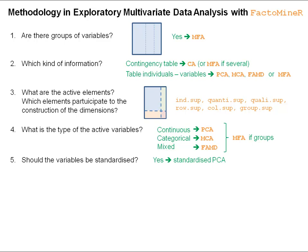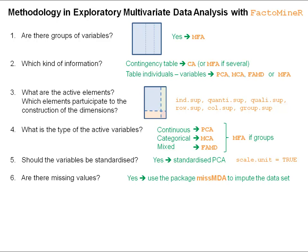If you want to standardize the variables, you will perform a standardized PCA and use the argument scale.unit equal to TRUE. Another question is: are there missing values? If there are missing values, you can use the package missMDA to first impute the dataset. The functions in this package will impute the dataset so you can perform a principal component method on a completed dataset, and then perform PCA, MCA, or MFA as usual. The imputation is done in a way that the imputed values do not contribute to the construction of the dimensions.